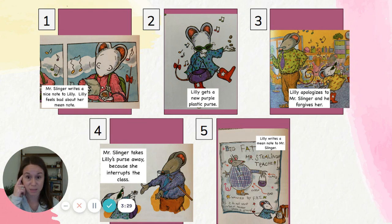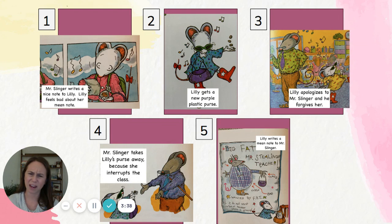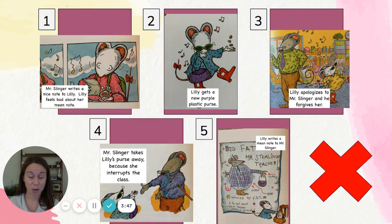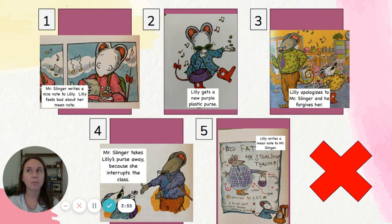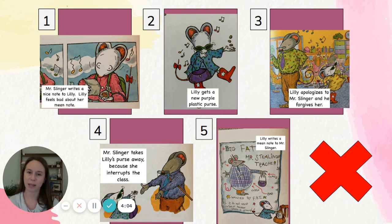Let's keep going and see if this makes a lot of sense. Mr. Slinger takes Lily's purse away because she interrupts the class. I don't know if that happened in this part of the story. But last, Lily writes a mean note to Mr. Slinger. These events are not told in order, and because they're not in order, if I was telling these events to someone who'd never read this book before, they would probably be really confused and not really understand the characters, the setting, the problem, the solution, or the important things that really happened in this book. Telling the story out of order or out of sequence does not make sense.